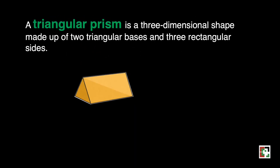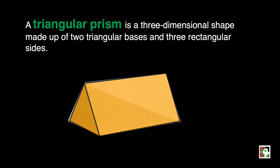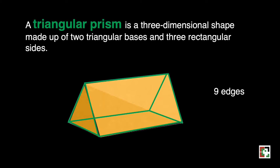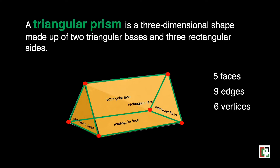Let us move to the next one — this is a triangular prism. It is a three-dimensional shape made up of two triangular bases and three rectangular sides. Let's count the number of edges: 1, 2, 3, 4, 5, 6, 7, 8, and 9. We have a total of nine edges. How many faces? There are two triangular faces and three rectangular faces, for a total of five faces. For the vertices: 1, 2, 3, 4, 5, and 6 — a total of six vertices.